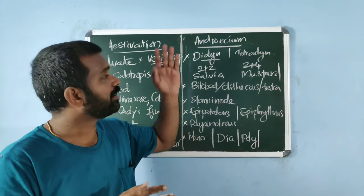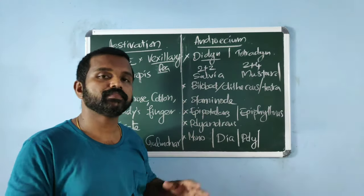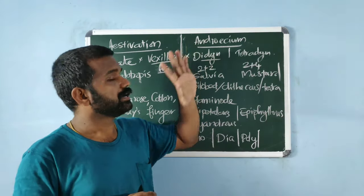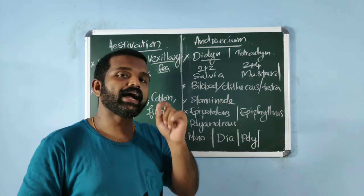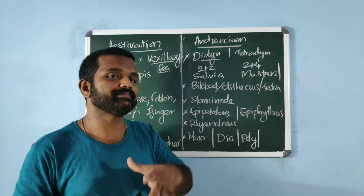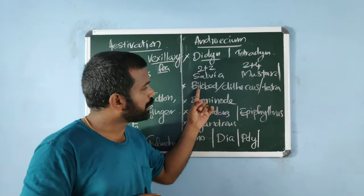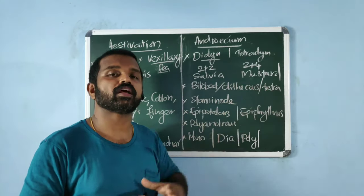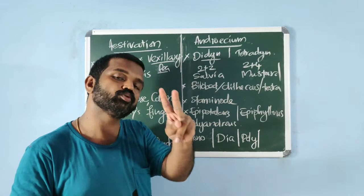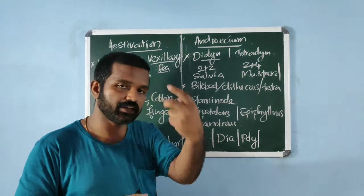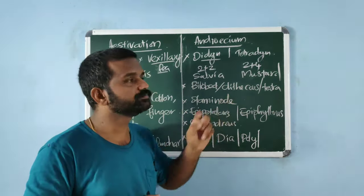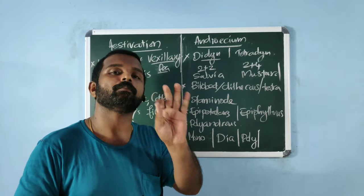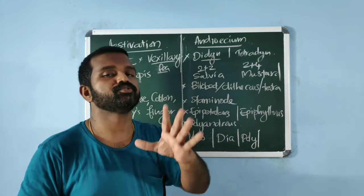Next, about androecium — the essential whorl. A typical angiosperm anther is bilobed, dithecous, and tetrasporangiate — it has two lobes, two thecae in each lobe, and four microsporangia total. A sterile stamen is termed a staminode.